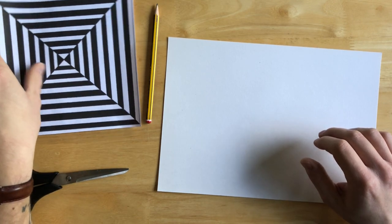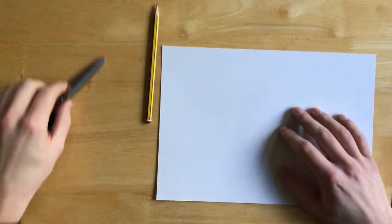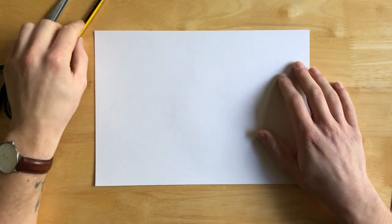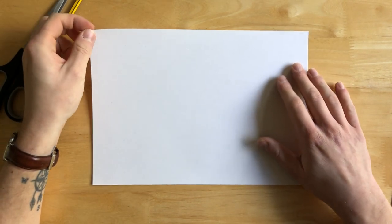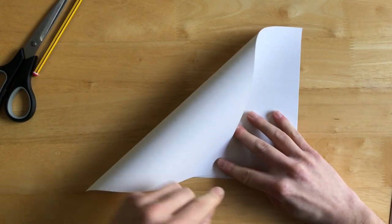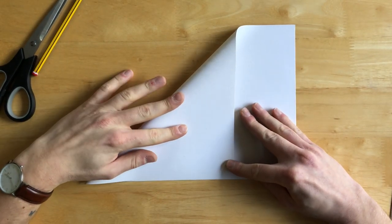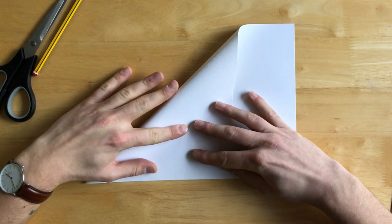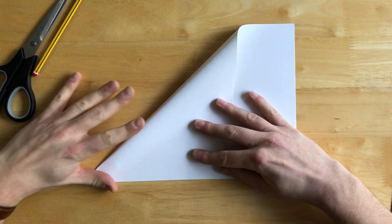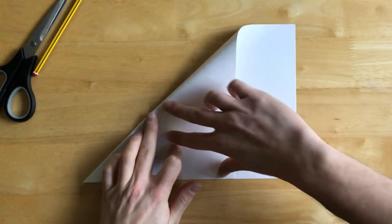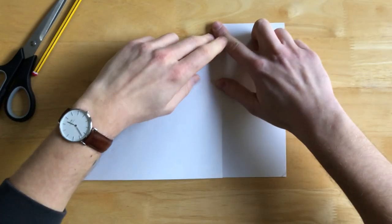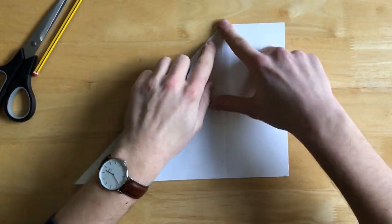So the first thing we're going to need to do is turn our rectangular piece of paper square. The easiest way to do this is to grab a corner of the page, fold it over so that the paper is lined up with the edge nice and neatly and then we're going to create a crease along this side of the paper and that will give us this rectangle here which can then be cut off.